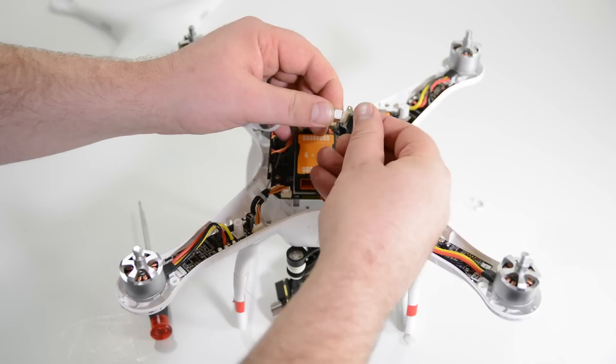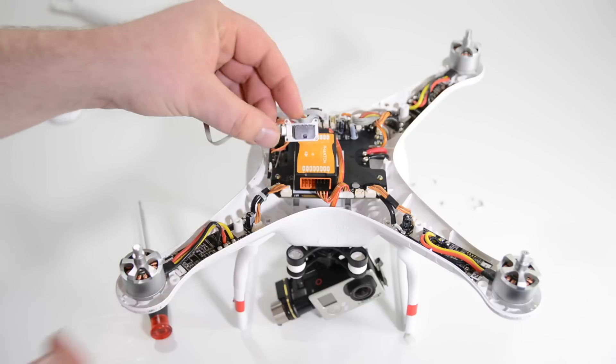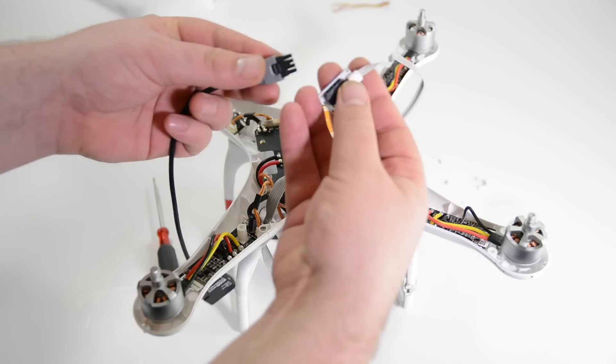You may need to use a pair of snips or scissors to trim any zip ties that are kind of restraining that cable. Now we'll want to take the iosd mini and plug that into the canvas.